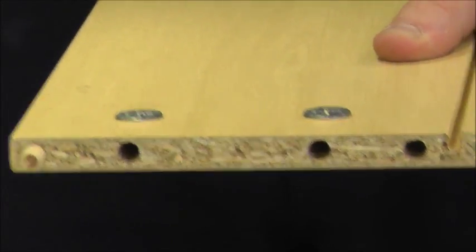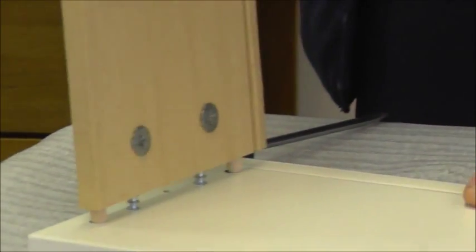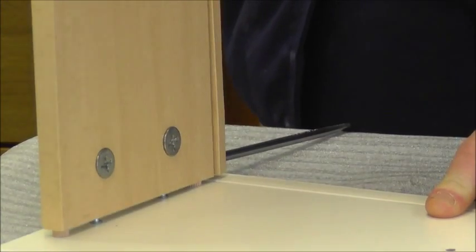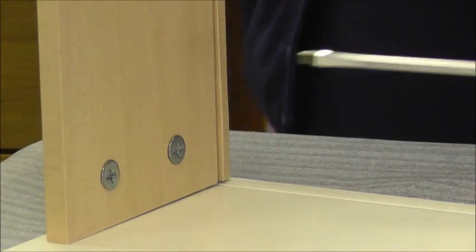Once again we have some dowels into the softwood nice and easily. If I place my drawer side onto my drawer front, apply a small amount of pressure to get a nice flush clean line along there.